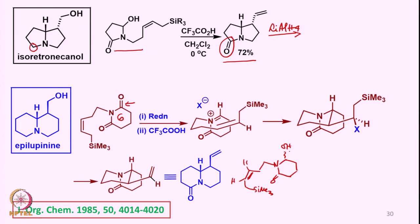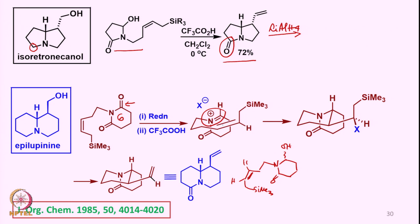You have the corresponding ammonium ion like this, which undergoes cyclization — this is 1, 2, 3, 4, 5, and 6 — to take place in this fashion to form this intermediate, and this intermediate can then lead to the formation of this particular product.